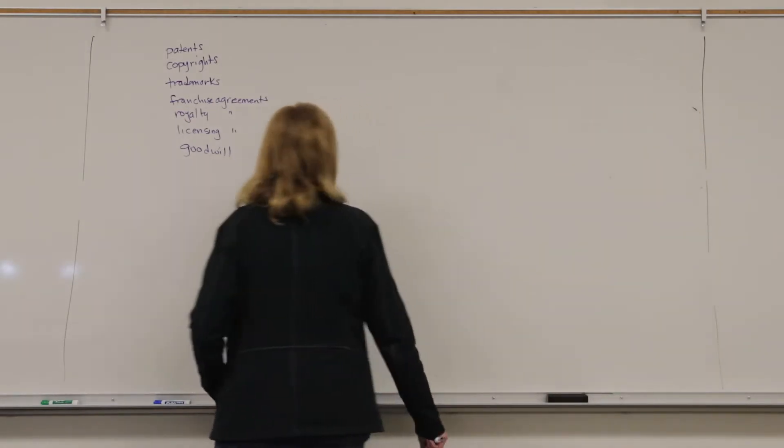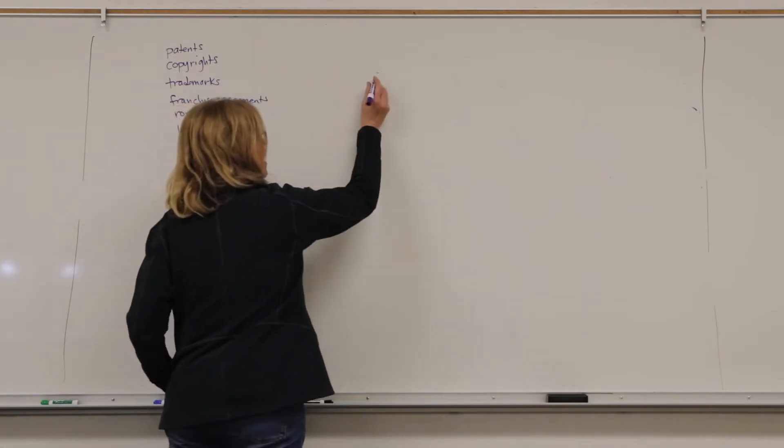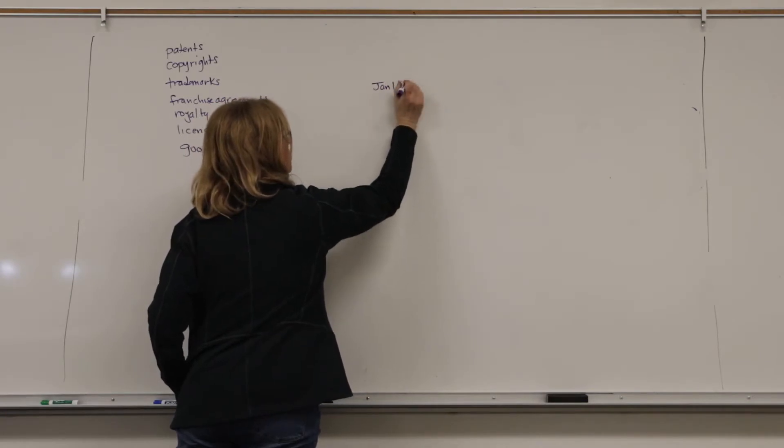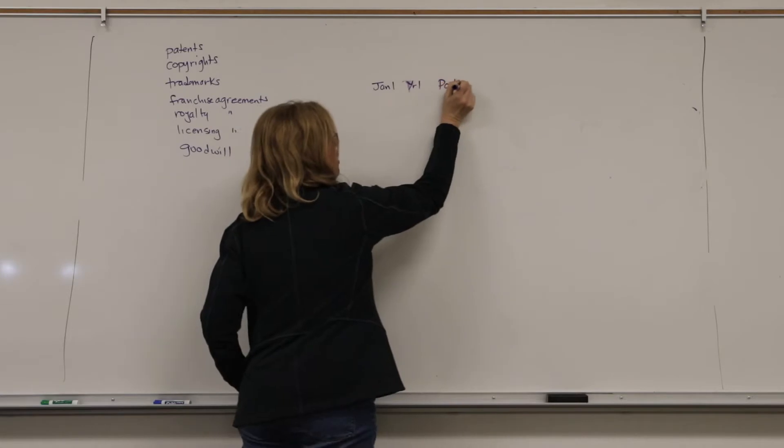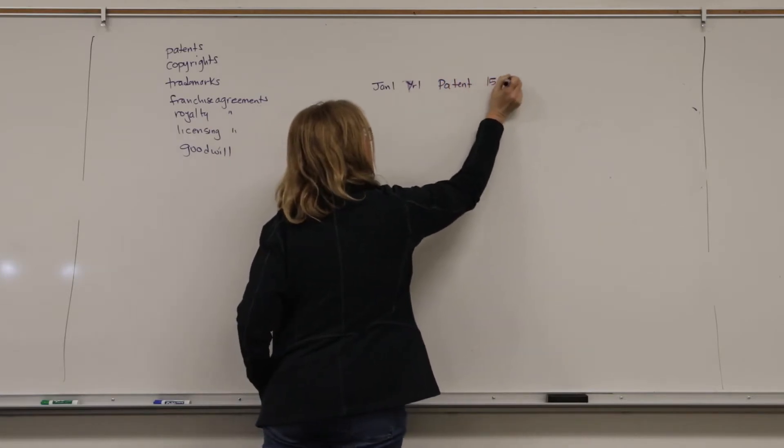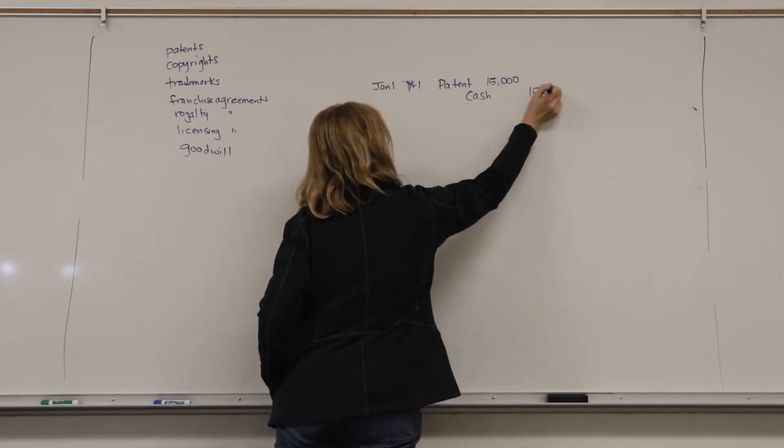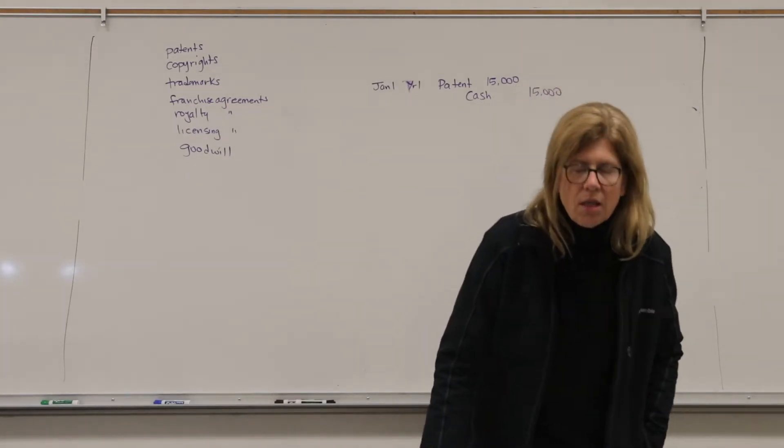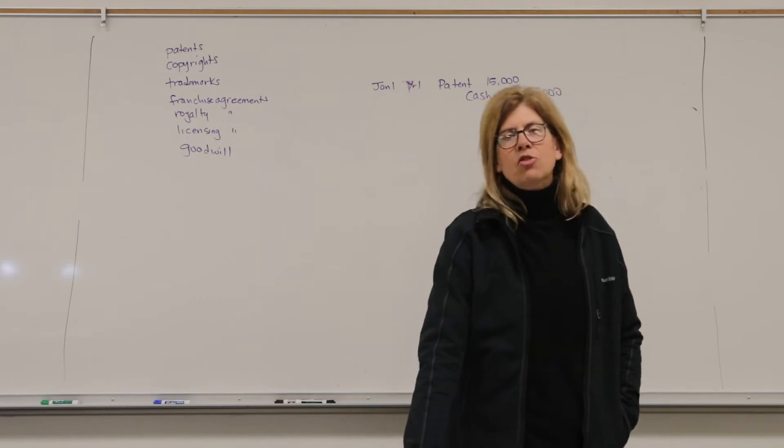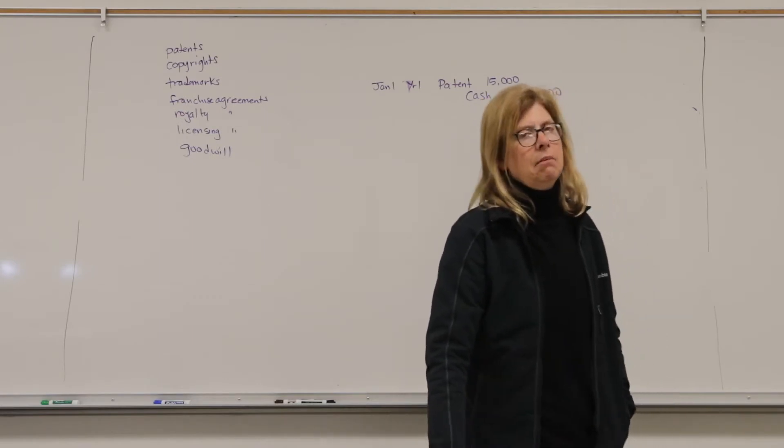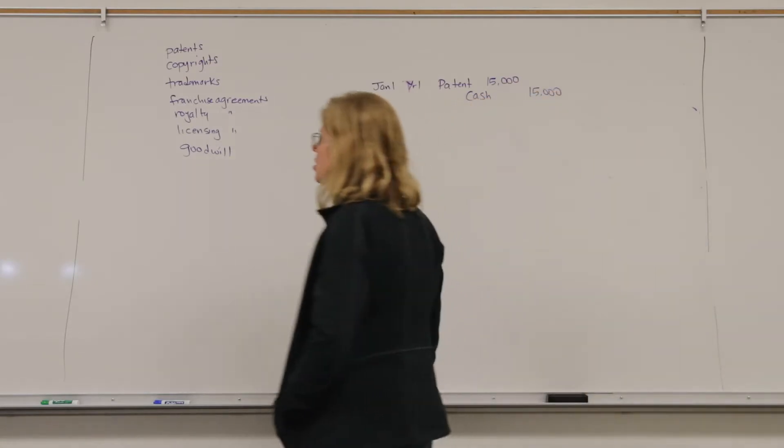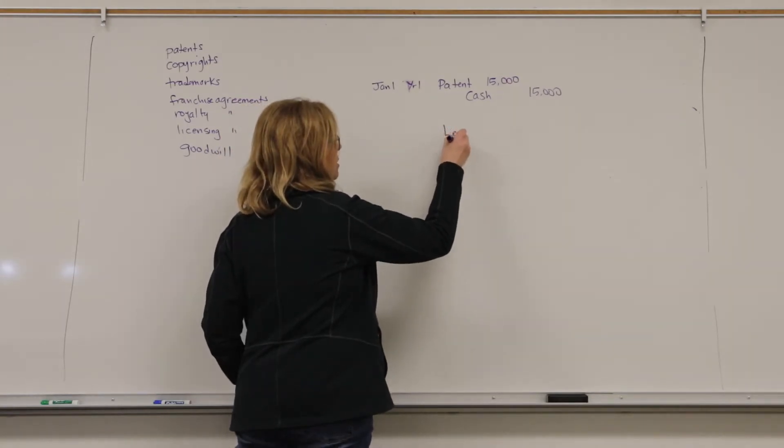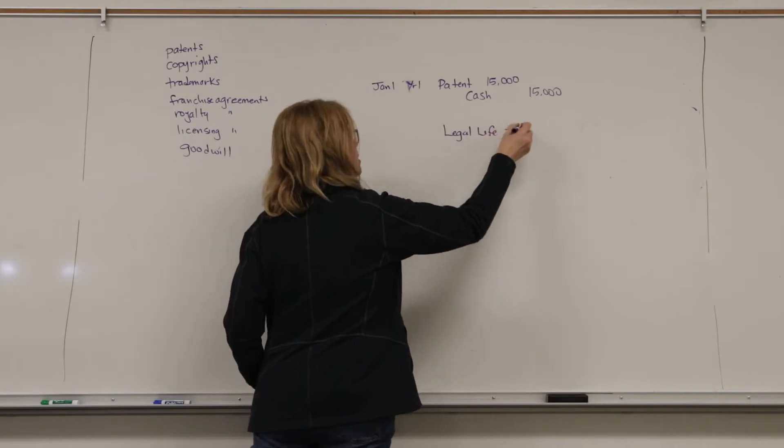So, in general, just to look at one. Let's say I purchased a patent from someone else on January 1, year 1. And let's assume this patent cost me $15,000. And I paid cash. Someone else went to the trouble to register this patent. Patents are good for 20 years. And when I buy this patent from somebody else, I don't get another 20 years. I only get the number of years remaining. So, legal life is 20 years, but I can only use it for how many years are left.